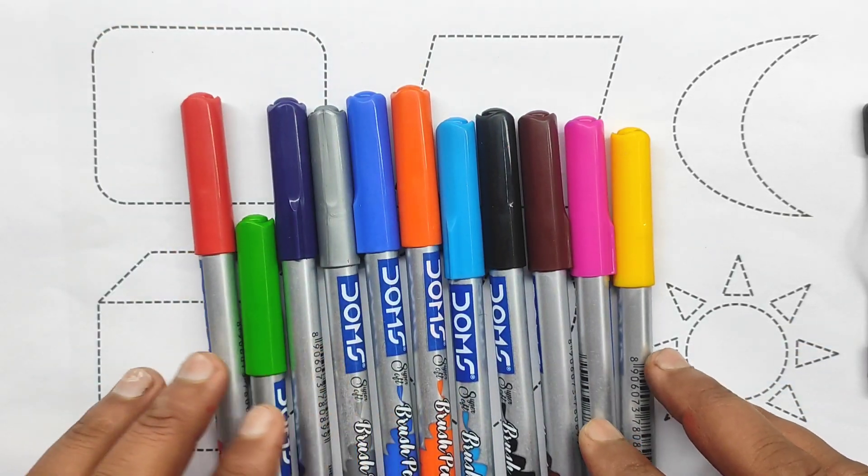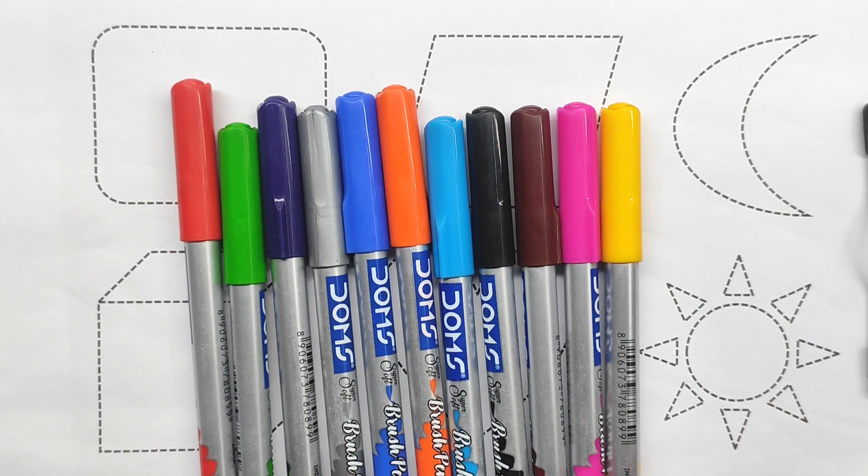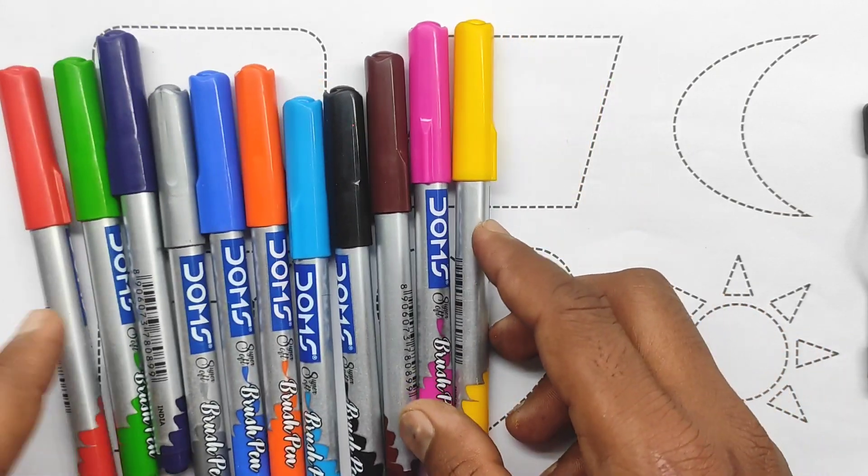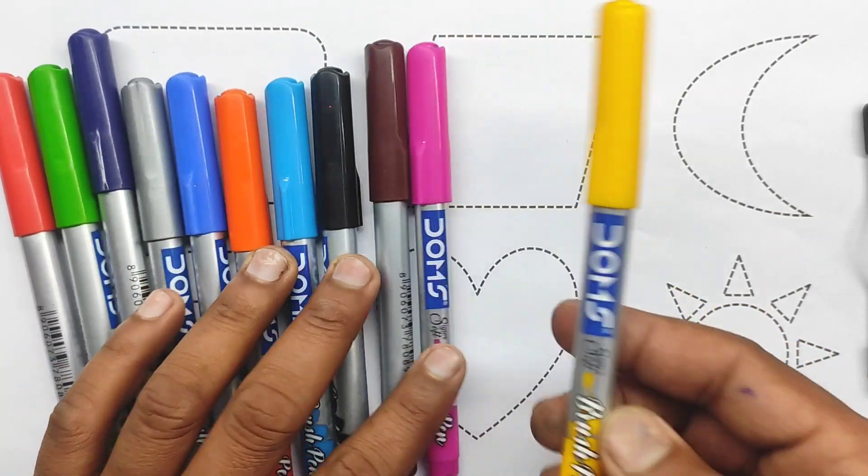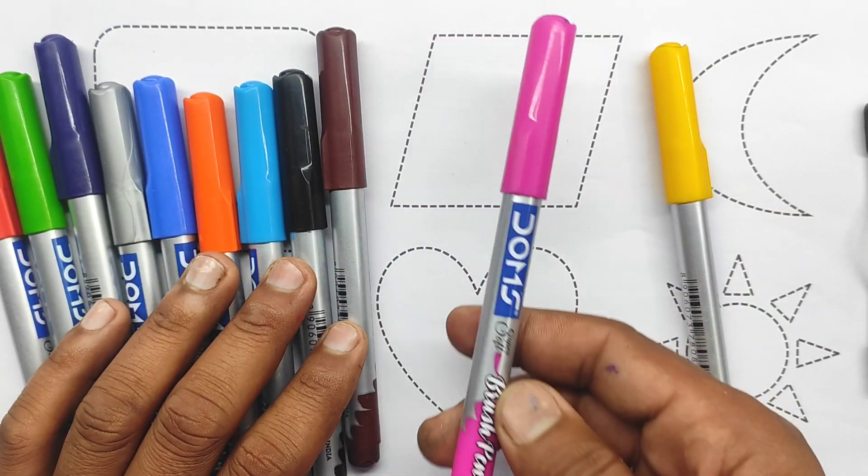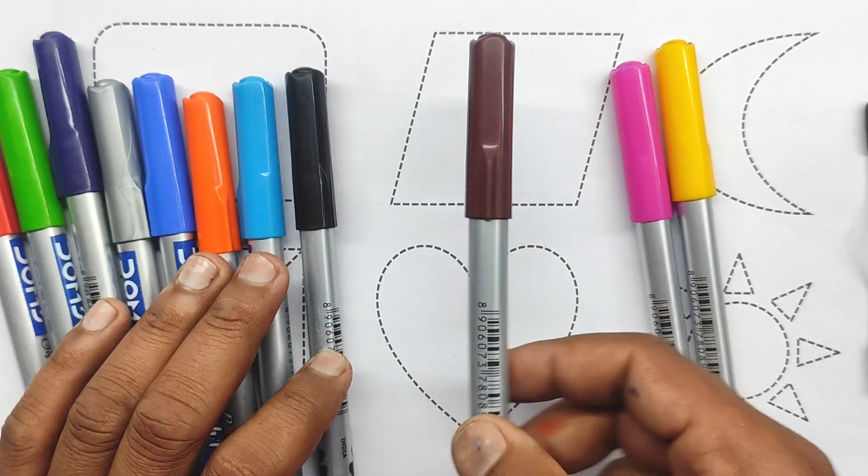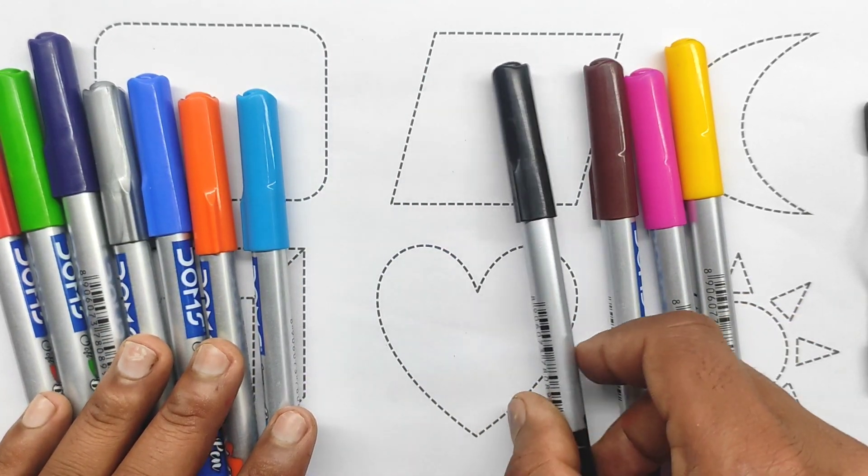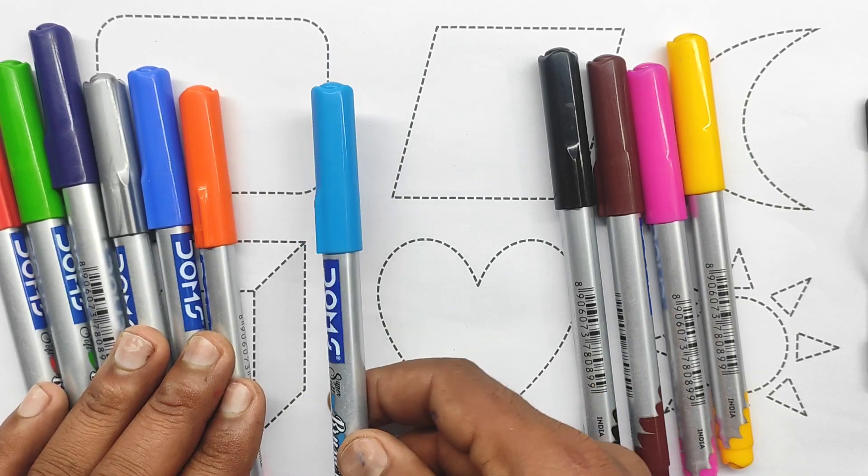It's colors name today. Learning shapes name. First learning colors name: yellow color, pink color, brown color, black color, sky blue color.